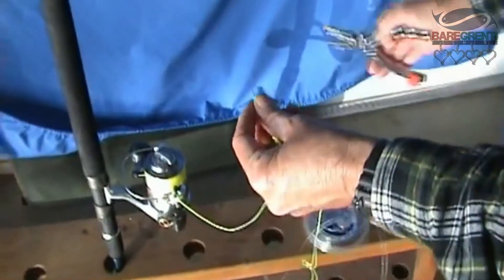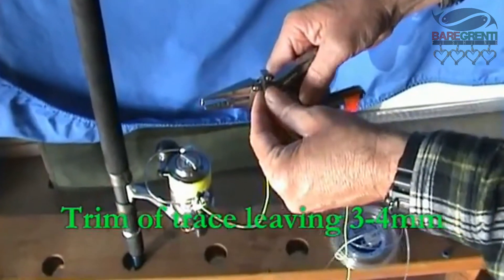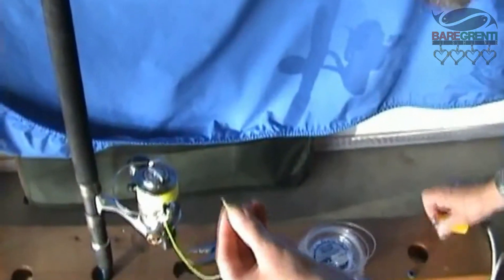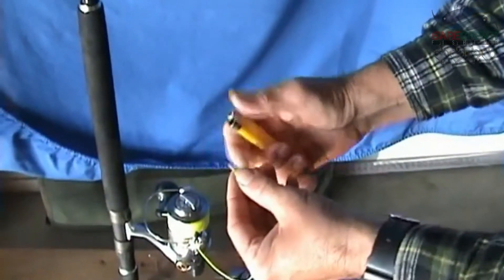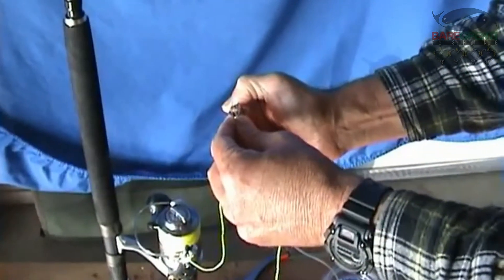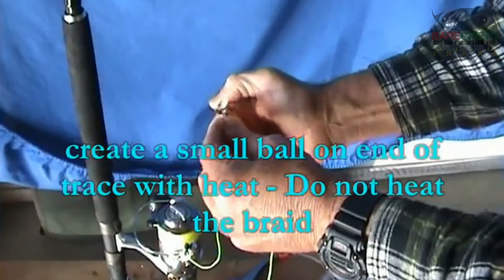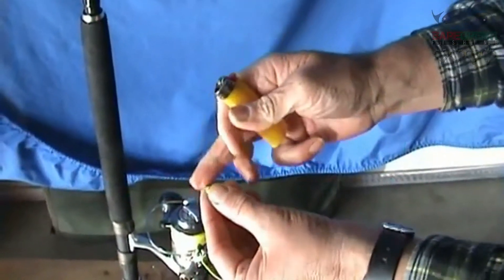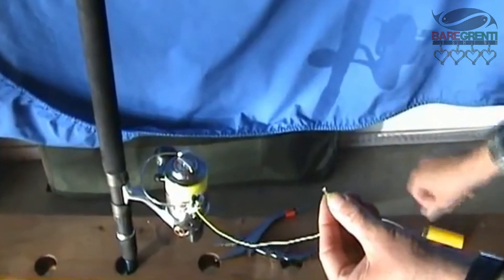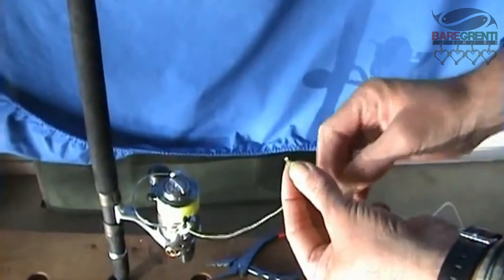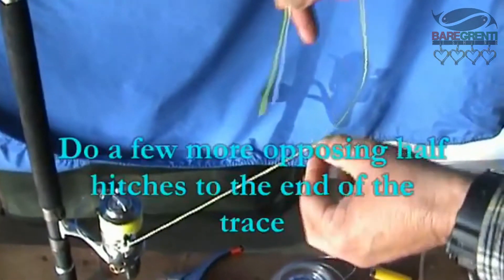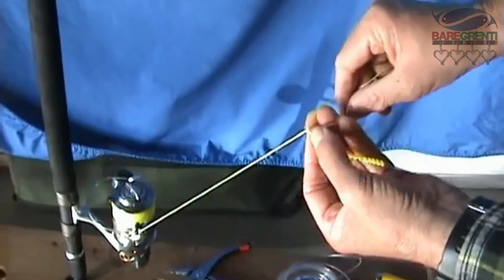What we do is we slip the line off. I'm just going to heat the end of the line here. That creates a little bit of a ball on the end there so you haven't got any sharp edges to cut into the braid when it's just up against the braid.